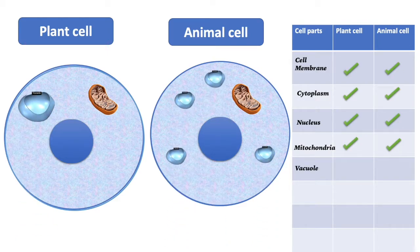This is the vacuole. The plant cell has one or two vacuoles, but they are very big. The animal cell has a lot of vacuoles, but they are very small. The vacuole stores food, water, and waste.